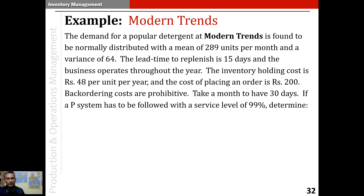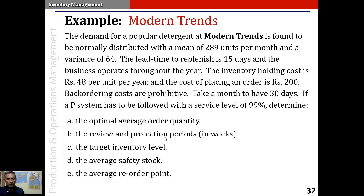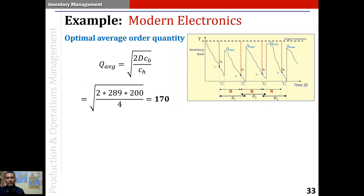The inventory holding cost is ₹48 per unit per year, and the cost of placing an order is ₹200. Backordering costs are prohibitive — take a month to have 30 days. If a P-system has to be followed with a service level of 99%, determine: the optimal average order quantity, the review and protection periods, the target inventory level, the average safety stock, and the average reorder point.